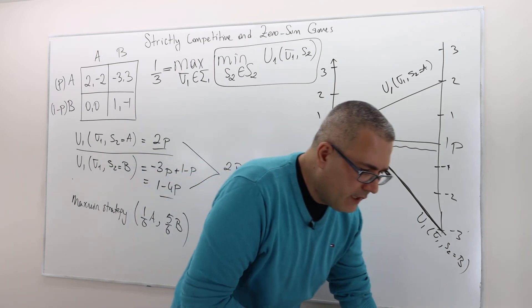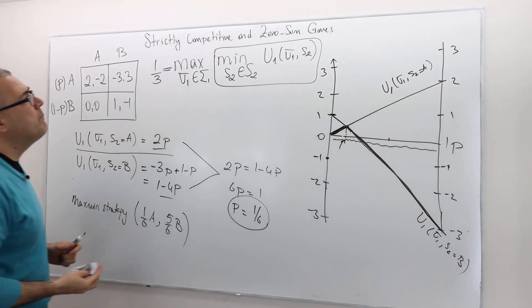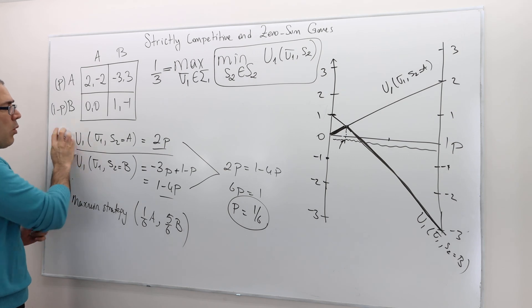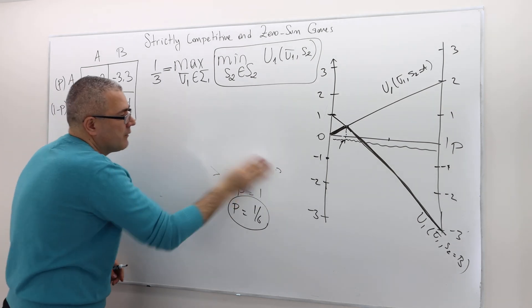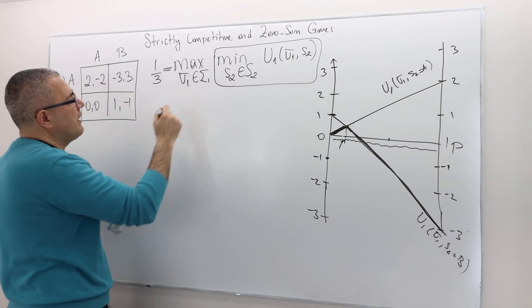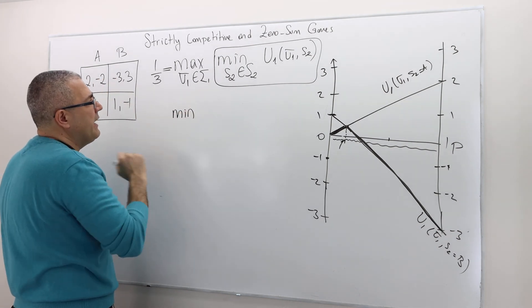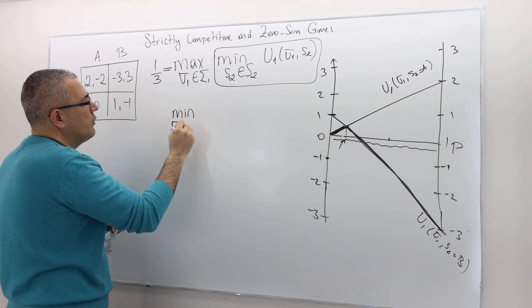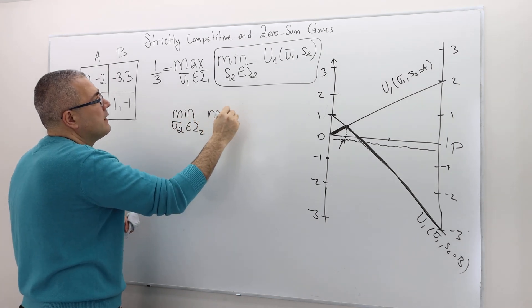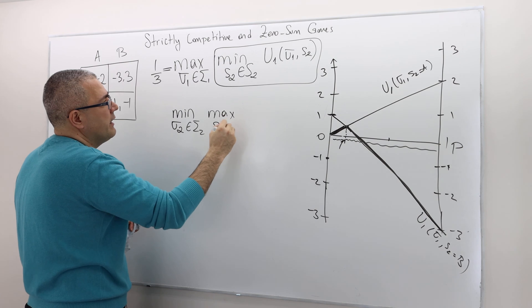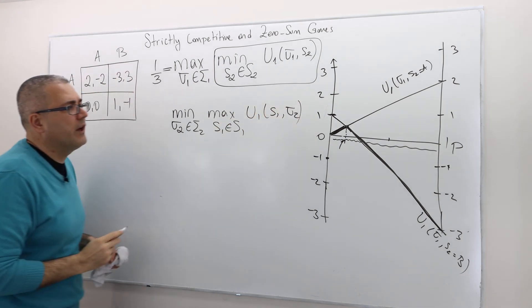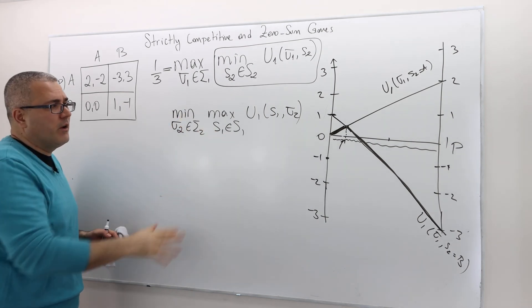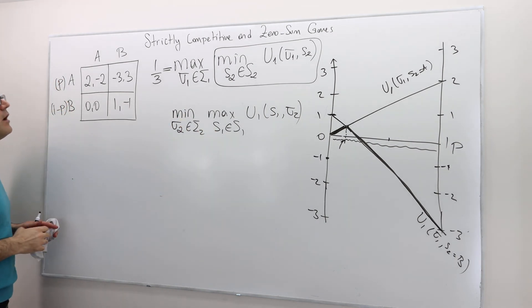Now let's find the min-max value for player one. How can we do that? Well, simple. This time, this is the thing we would like to find: min sigma 2 in sigma 2, max s1 in s1, U1 s1 sigma 2. Okay? So I'm going to need a different graph. I'll do it. But first, what is sigma 2?